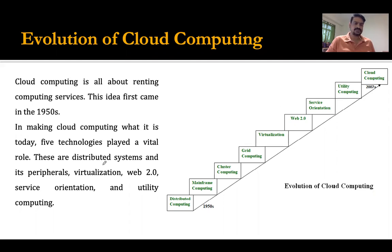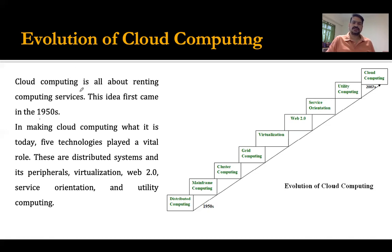Cloud computing is all about renting computing services. This idea first came about in the 1950s. Five technologies played a vital role in making cloud computing what it is today: distributed systems and their peripherals, virtualization, Web 2.0, service orientation, and utility computing. This idea of cloud computing is not a new idea — it is a very old idea, going back to around 1947 when the first computers came into existence.